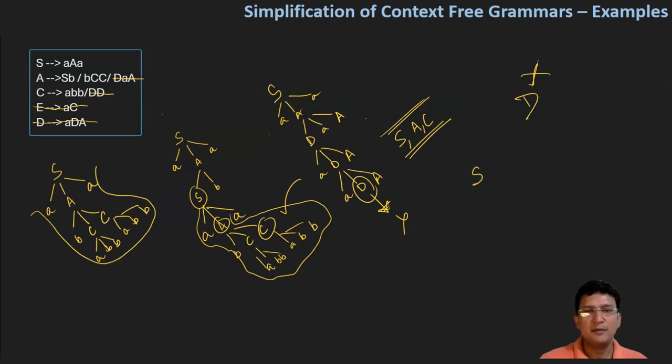So the simplified grammar becomes: S produces aAa, A produces SB or BCC, and C produces abb. This is the simplified grammar for the given grammar.